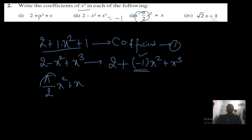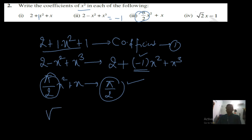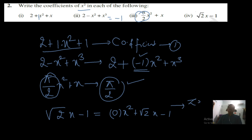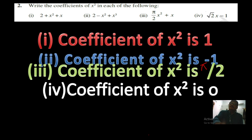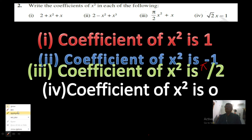For the next expression, what is associated with x²? π/2 is associated with x². So we can say that the coefficient of x² is π/2. For the last expression, I can write it as 0 into x² plus √2·x minus 1 — there is no x² term. In mathematics, we say that 0 is the coefficient of x² here.